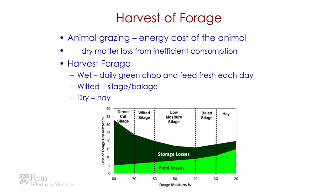Similarly, when we harvest forages, we can do it when they're wet, wilted, or dry. If we harvest it very wet, we have high losses from storage — it's too wet and we get a lot of seepage. As we let the material dry, we get less storage losses but more field losses. As material gets dry enough to make hay, we may get leaf shatter — the leaves get dry and when you make it into hay, some leaves get broken and lost in the field. What we'd like to do is harvest it in the middle for making silage, where we have minimal storage losses and minimal field losses.